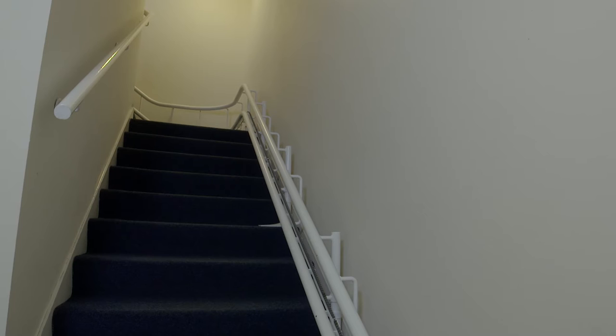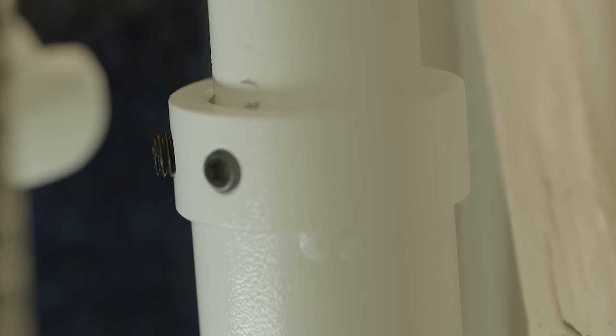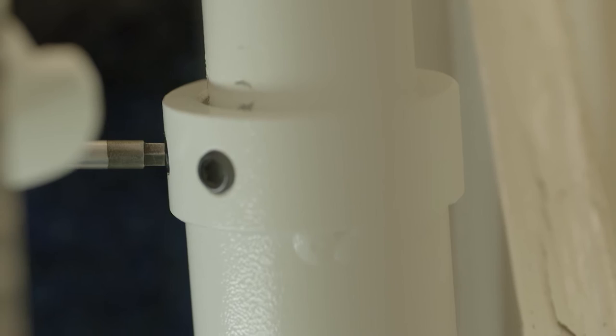When you are happy that the stairlift is in the correct position, individually loosen the grub screws on each of the base collars and secure each leg base to the staircase using the preferred fixing method. Failure to loosen the grub screws when fixing may cause the rail to move. Tighten the grub screws back up and repeat on each leg plate, ensuring the rail is still level.